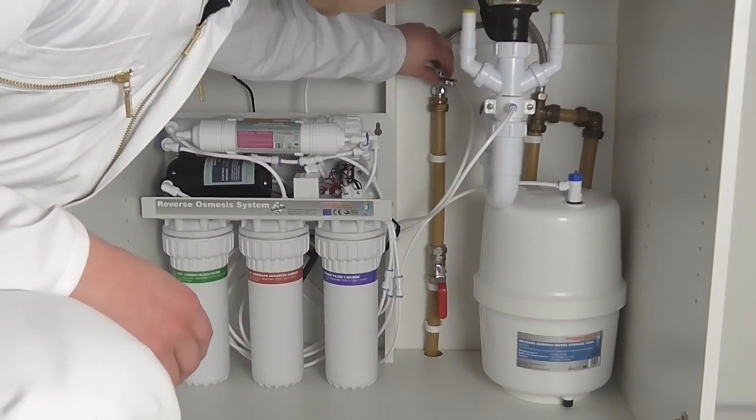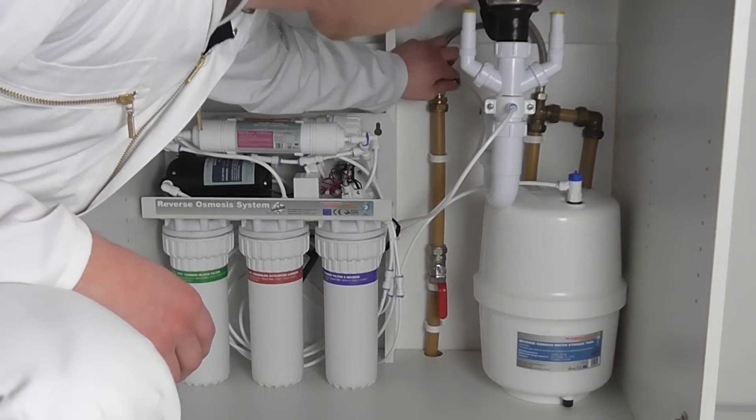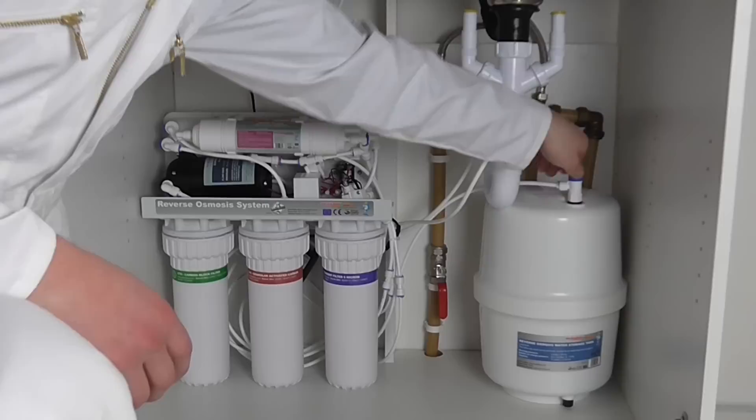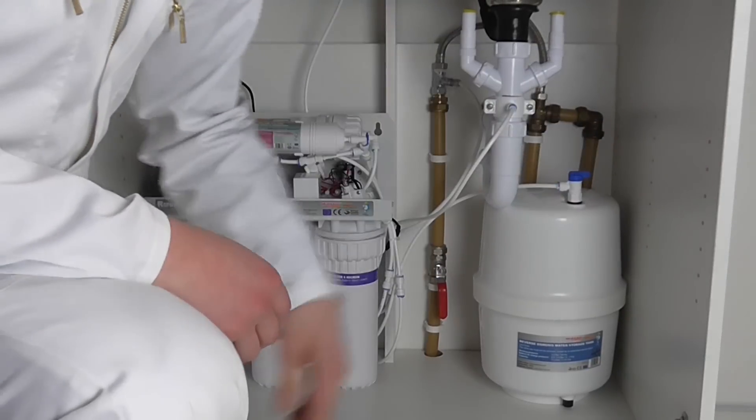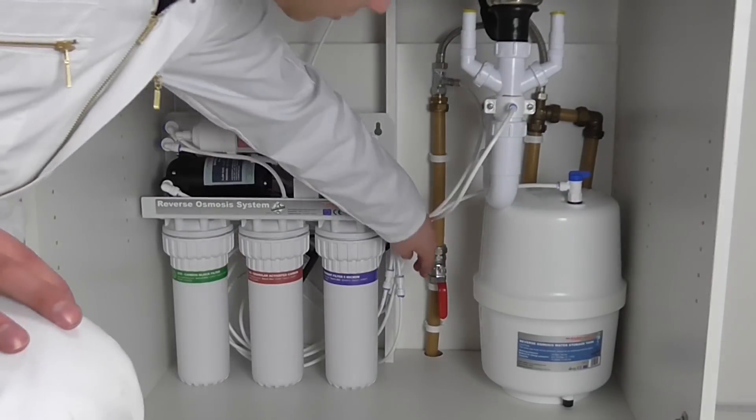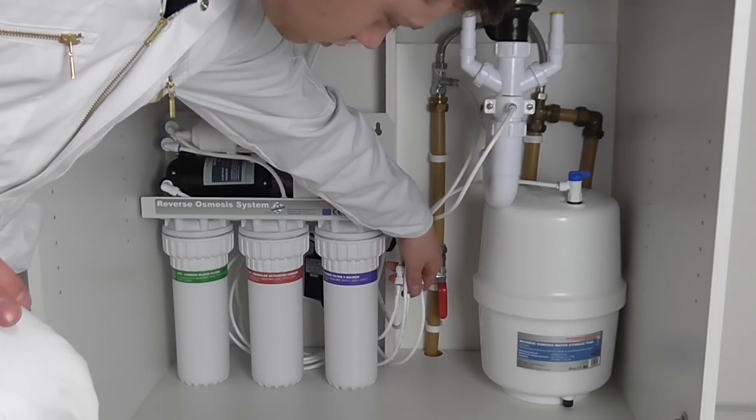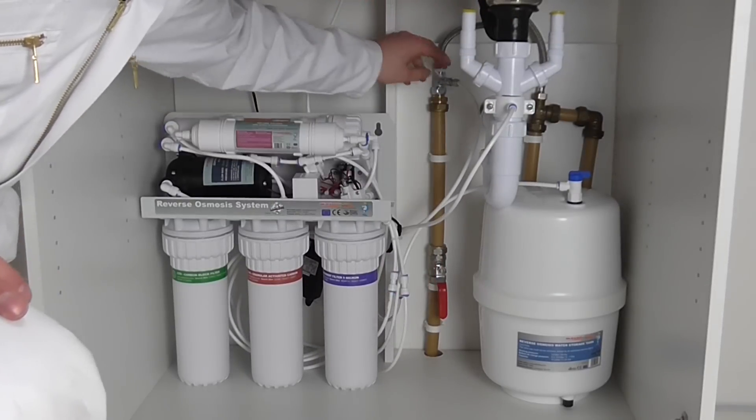Turn on your mains water. Open the T-piece valve or the saddle valve, then open the valve on your pressure tank. Be sure to check for leaks on all connections. We recommend checking for leaks at regular intervals until you are satisfied that there are none.